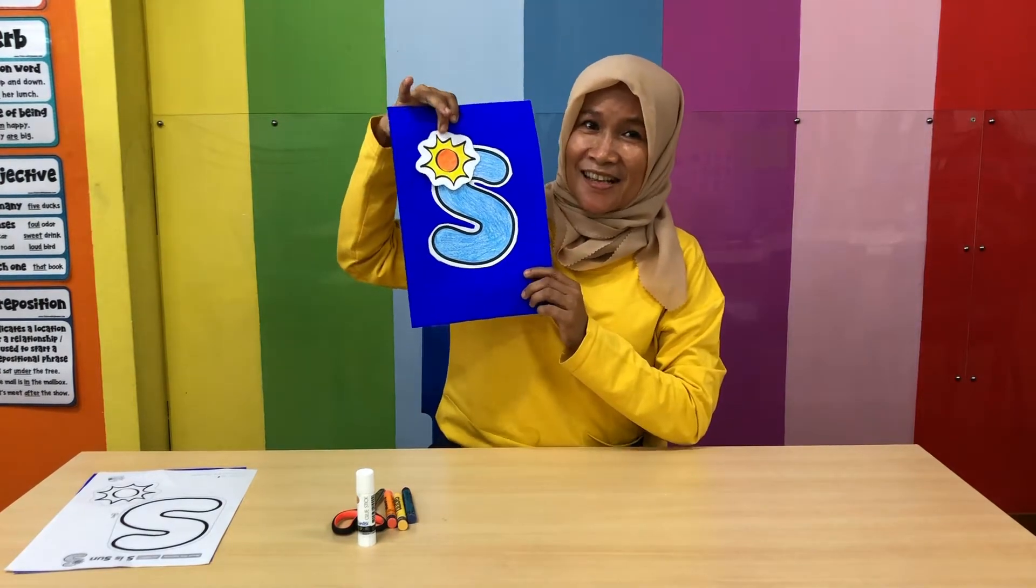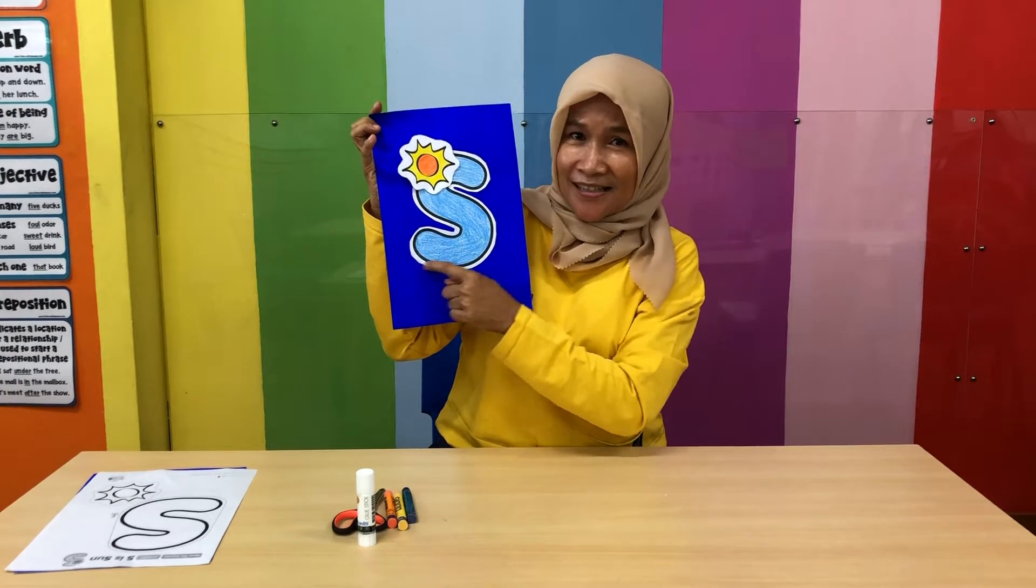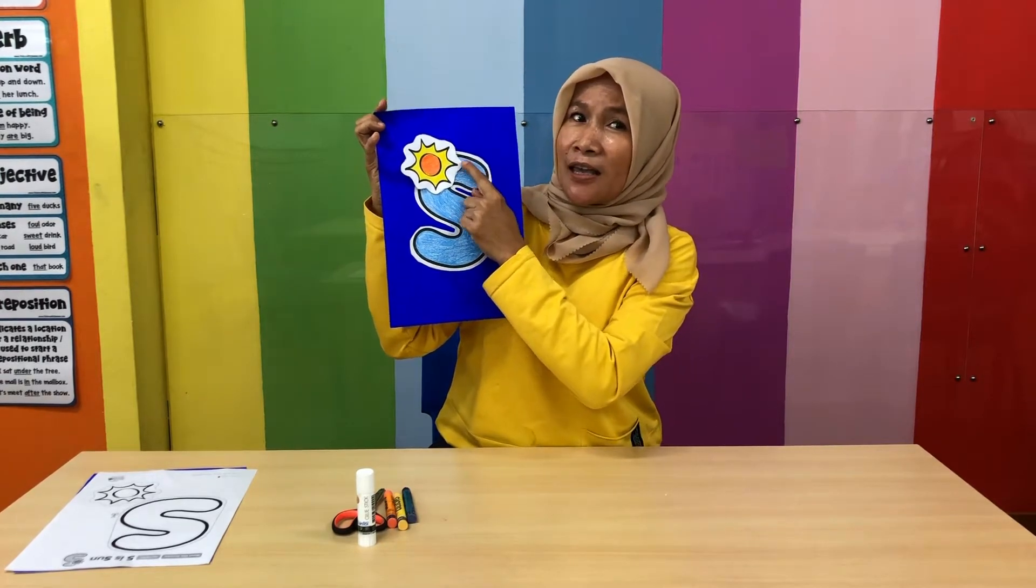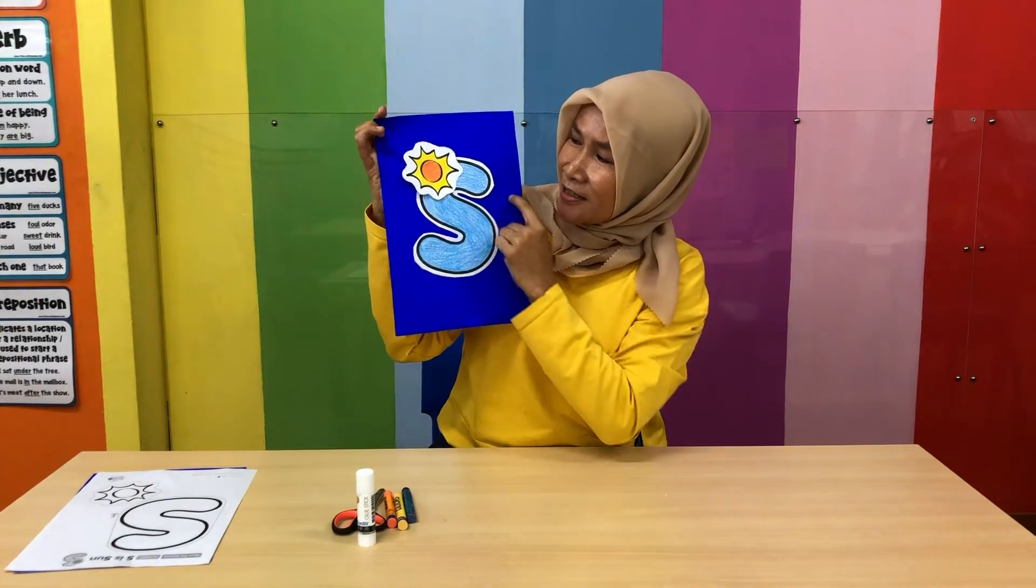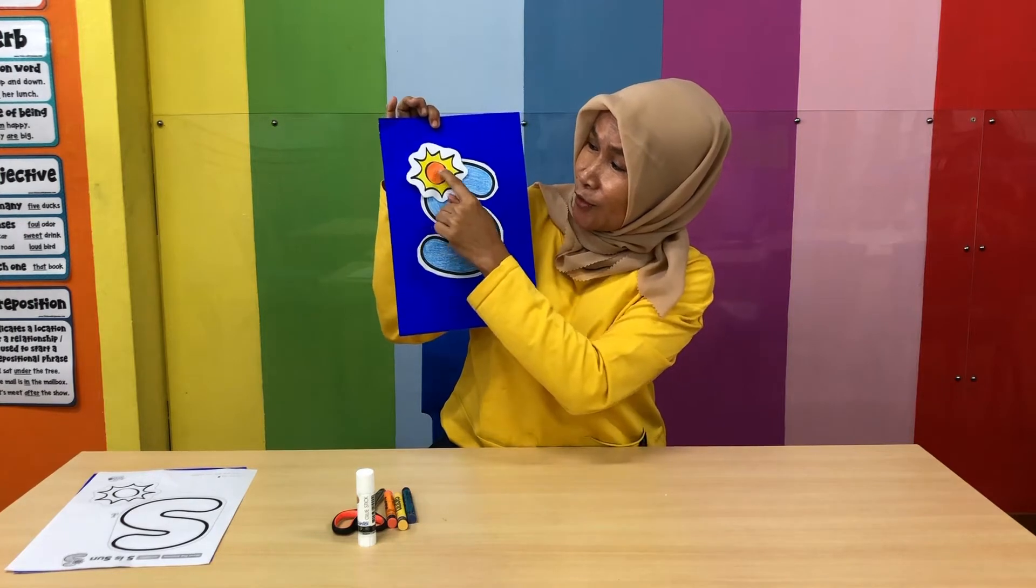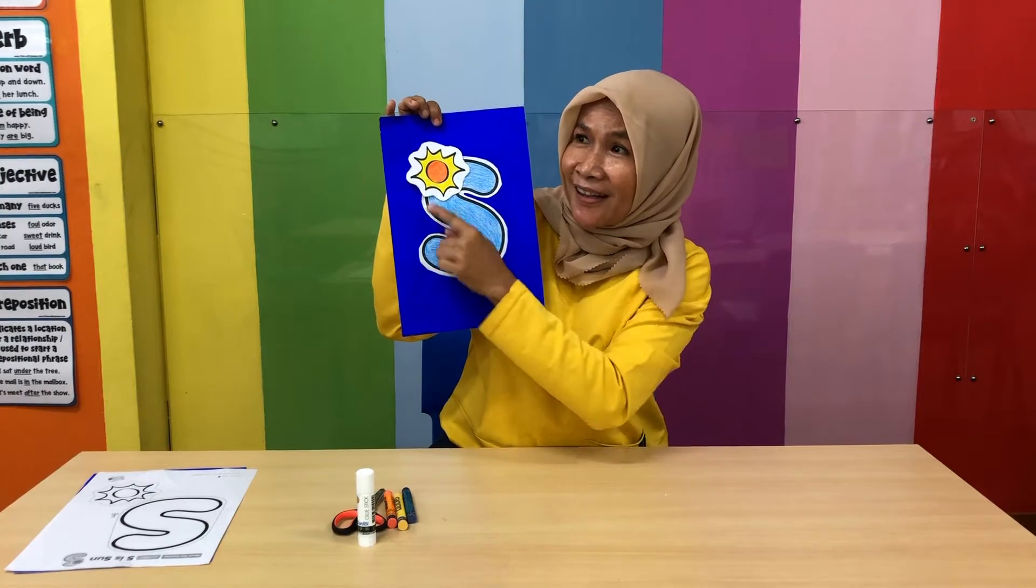What letter is this? This is letter S. Yes, this is letter S. What is the letter for? What is the sound for letter S? For sun. What color is sun? It is yellow and then orange. Later you will be coloring.